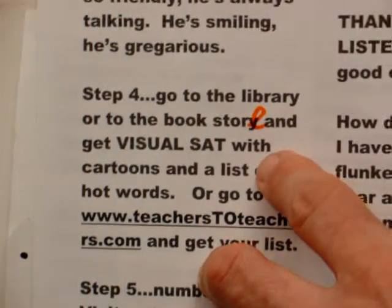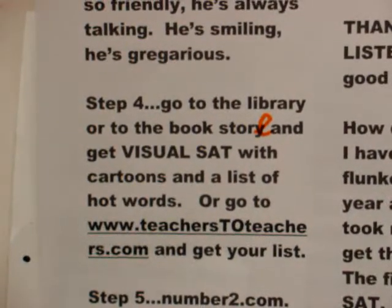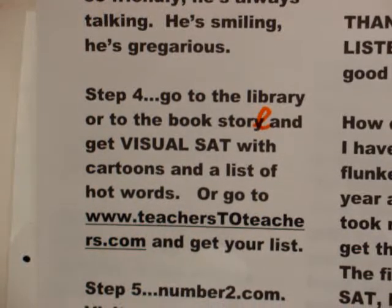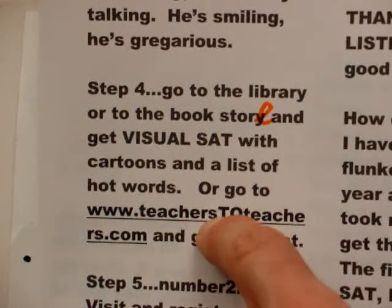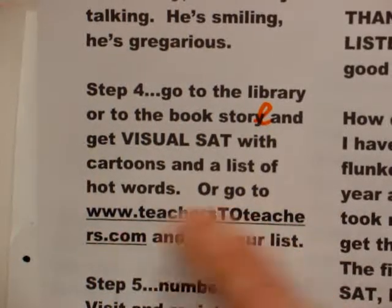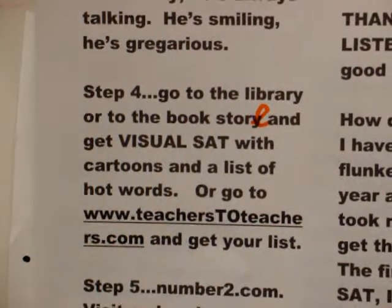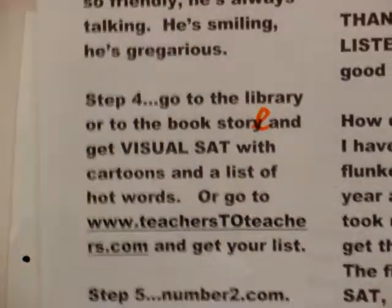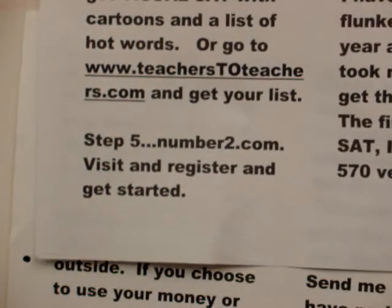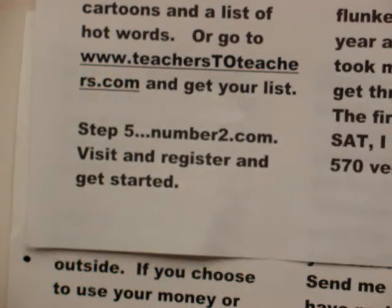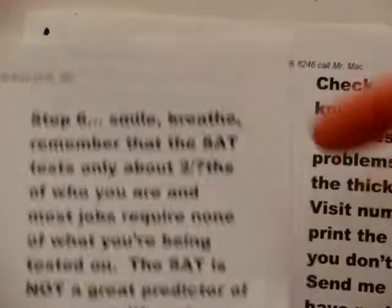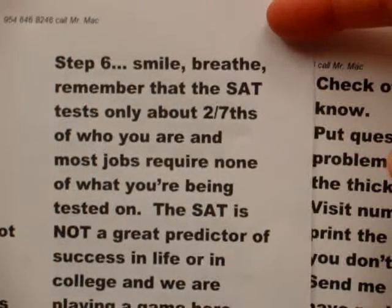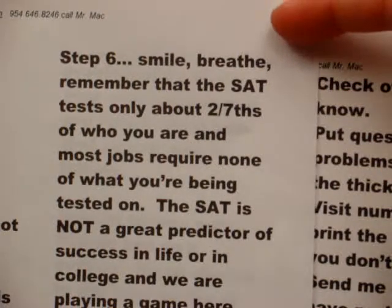Step four: go to the library or to Barnes and Noble and get a visual SAT book with cartoons and a list of hot words. Or go to teachers2teachers.com to get your word list. Step five: go to number2.com, register, and get started.